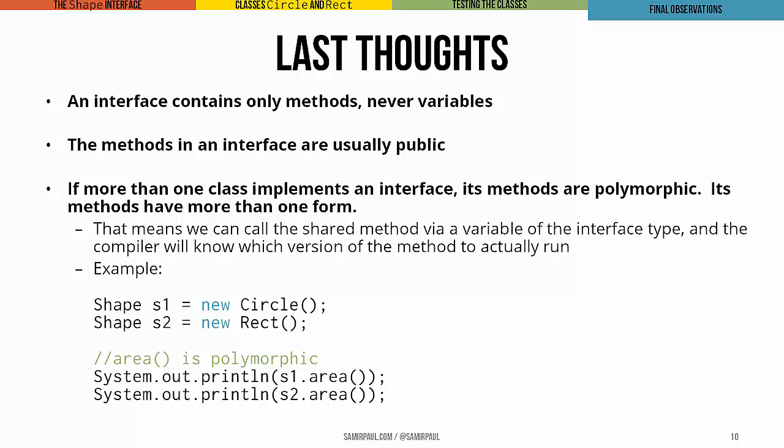That means that if we have a variable of the interface type, for instance a pen variable pointing at a wiggle pen, or a shape variable pointing at a circle, and another shape variable pointing at a rectangle, the compiler will be able to tell which version of the method to run. I have shapes S1 and S2 pointing respectively at a circle and a rect. They both have the method area, and that means area is polymorphic. There's more than one form of area: the form associated with circle objects and the form associated with rectangle objects.